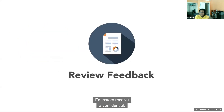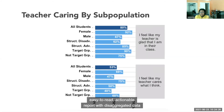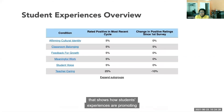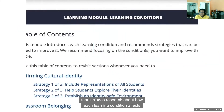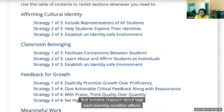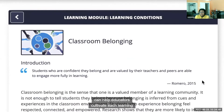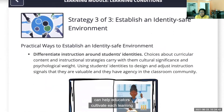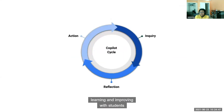Educators receive a confidential, easy-to-read, actionable report with disaggregated data that shows how students' experiences are promoting or hindering equitable learning. Educators have access to rich content that includes research about how each learning condition affects engagement and equity, and strategies and activities that can help educators cultivate each learning condition in their classrooms. Educators have the opportunity to continue learning and improving with students by repeating the process or engaging in a new cycle.